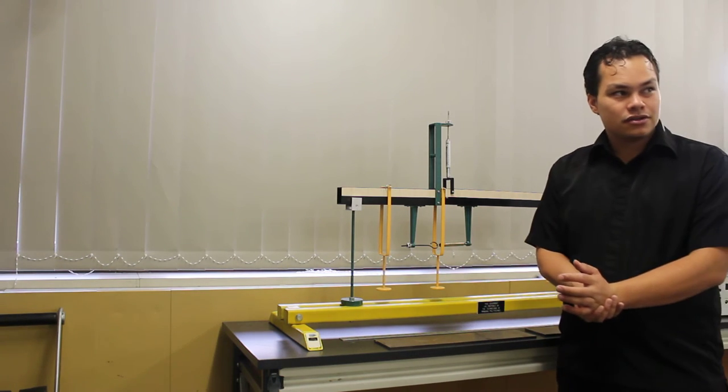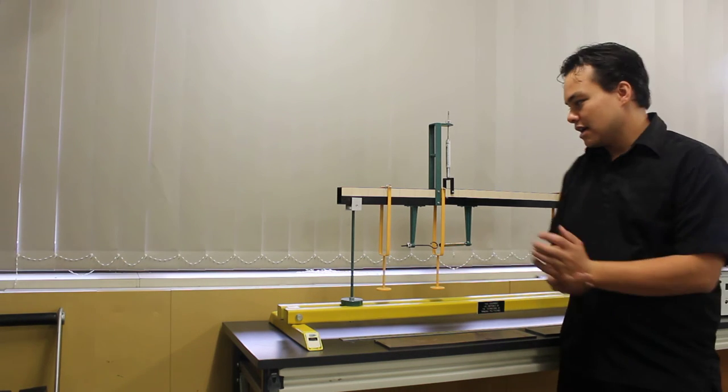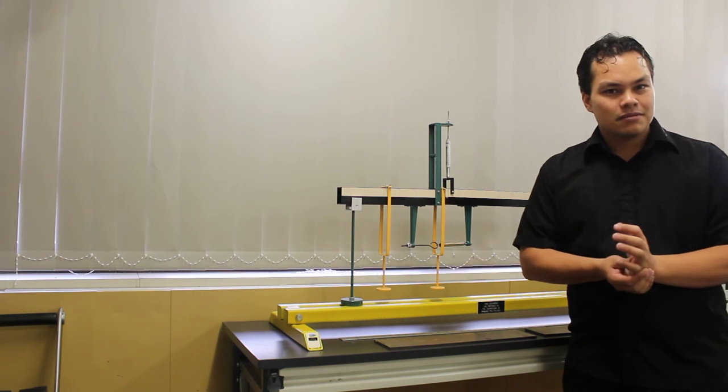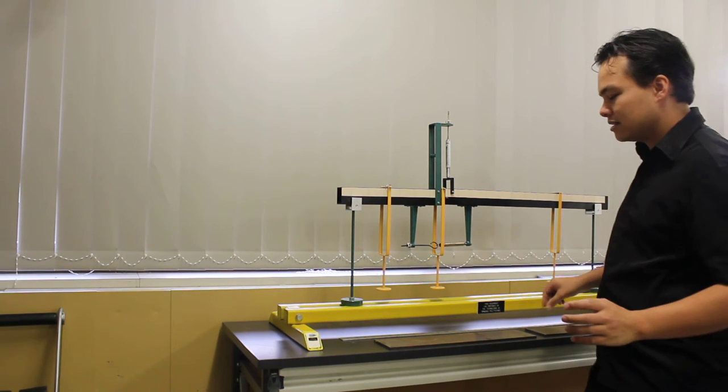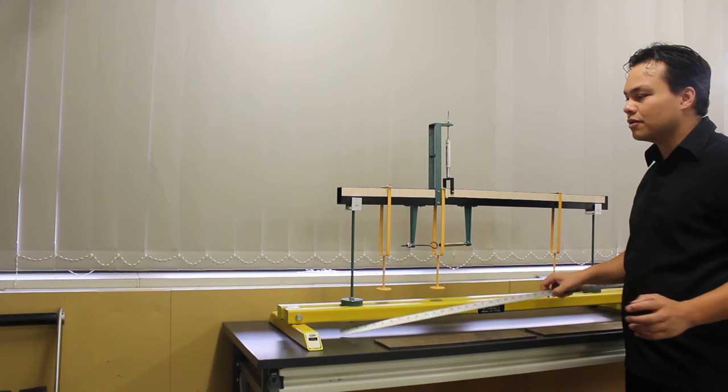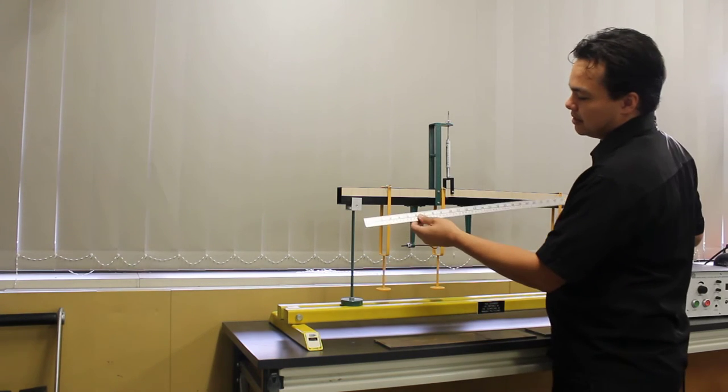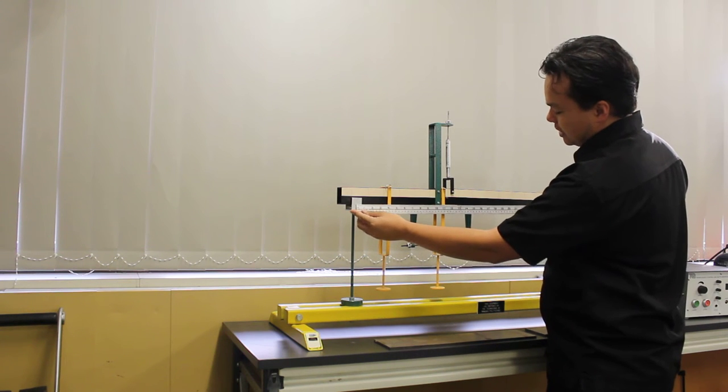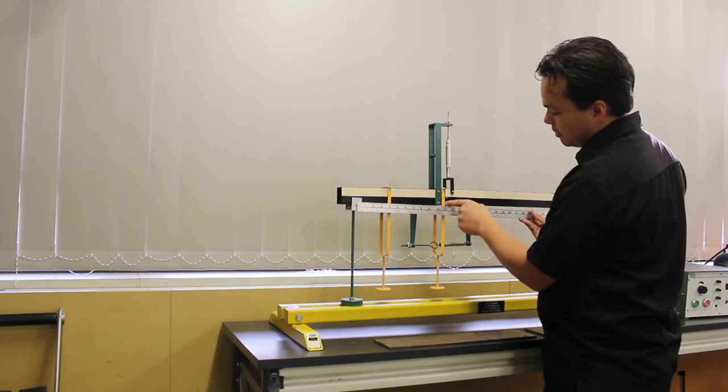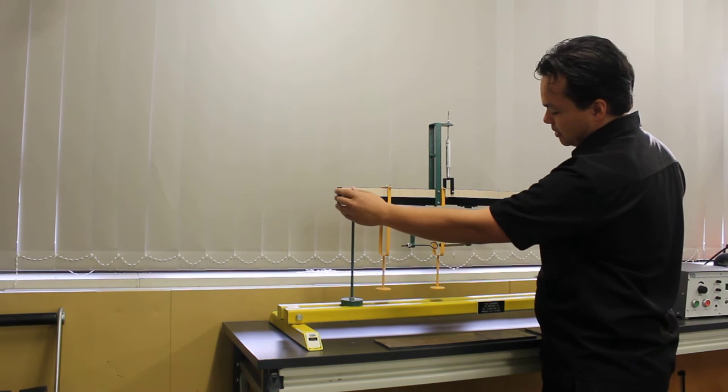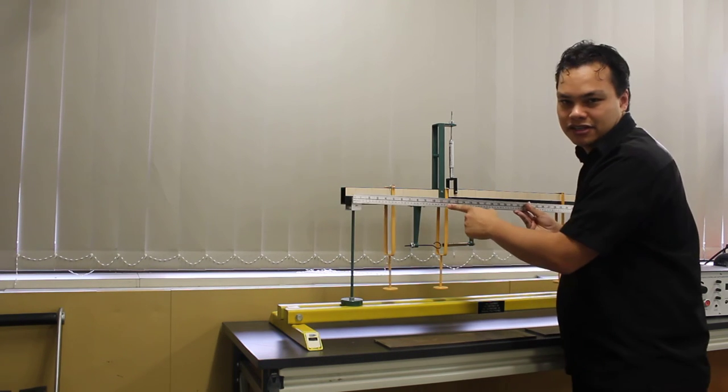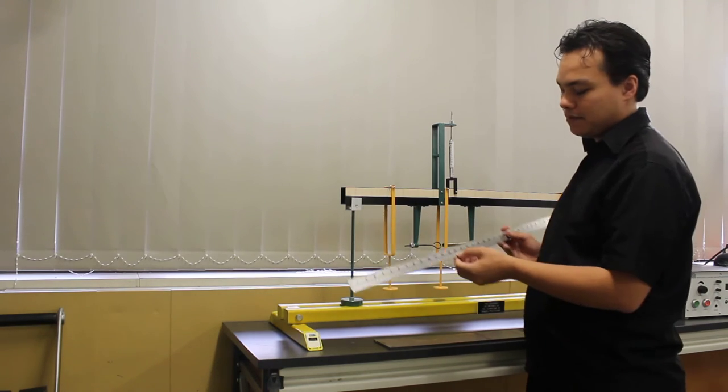The next step is to check that the cut in our beam is the same as the value which is in our lab sheet. At the moment this is set to be 0.3 meters away from the left hand end. So we take our ruler, we see a gap in the center of our component and I see that I need to move this a little bit to the right so I take the beam and I shift the whole assembly towards the right hand side until it reaches the 30 millimeter mark.